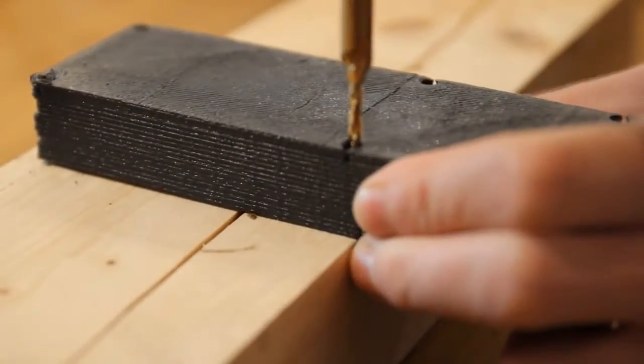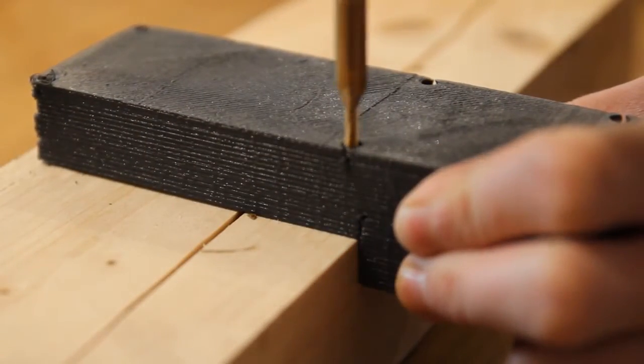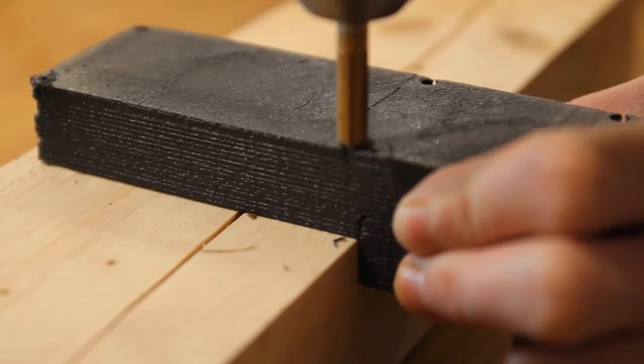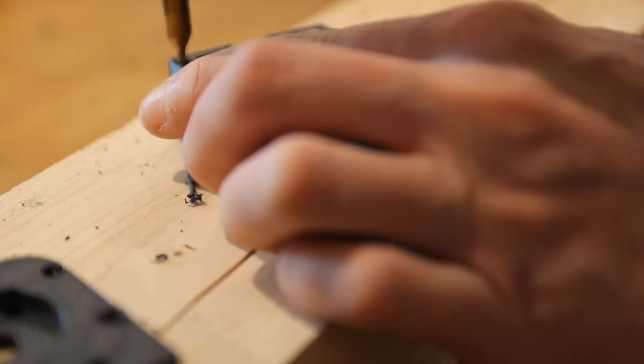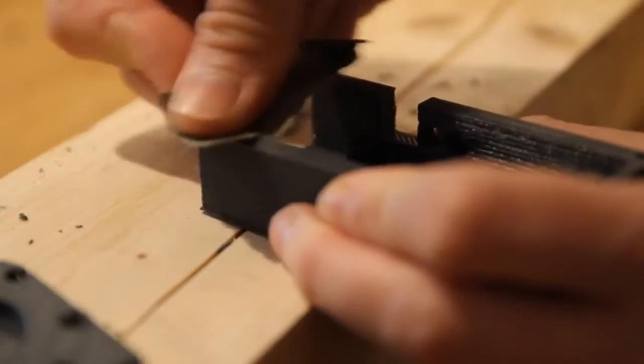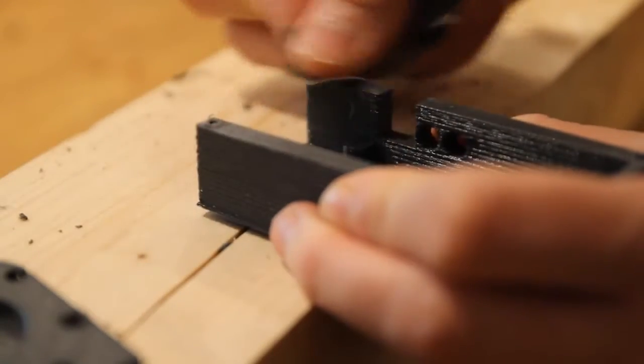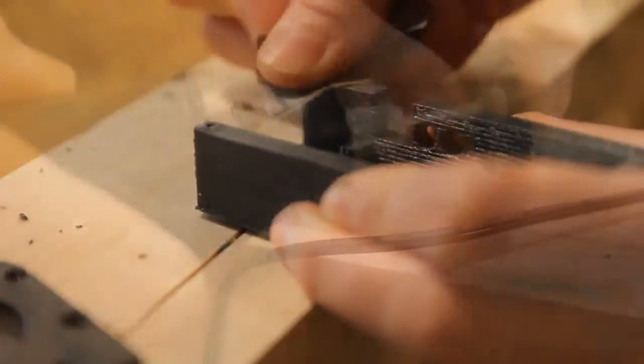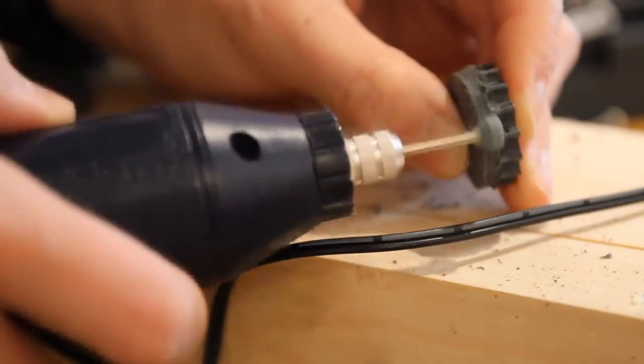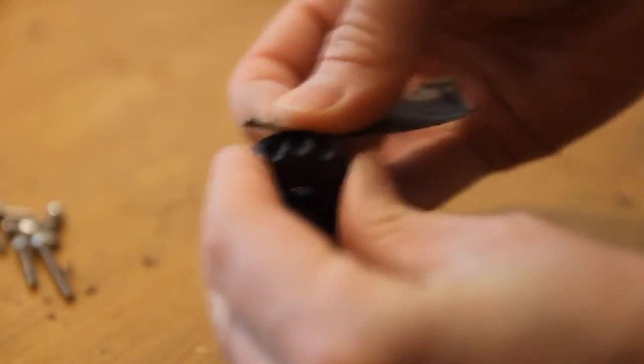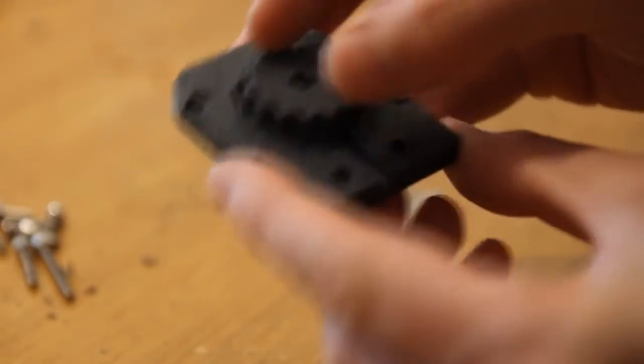So first thing when you get your 3D printed parts is to countersink the screw holes. And then you're going to sand them down. Use some fine coarse sandpaper to ensure you get a nice fit inside the surround.